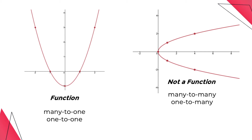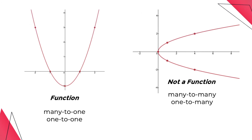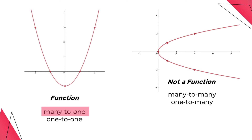To know the type of relationship, we will use a horizontal line test. A horizontal line test is used to determine whether a function represented by a graph is one-to-one. We draw a horizontal line and check the number of intersections with the graph. For the first example, the horizontal line intersects the graph twice — it has many horizontal intersections and only one vertical intersection — thus it represents a many-to-one relationship. For the second example, the horizontal line intersects the graph once, with one horizontal intersection and many vertical intersections, so it represents a one-to-many relationship.